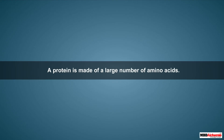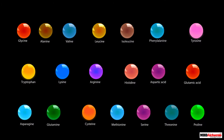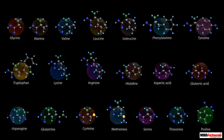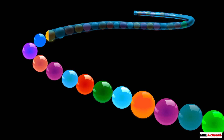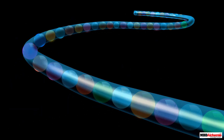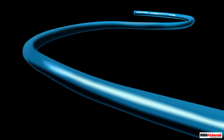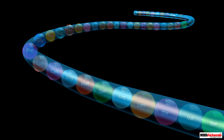As we already know, a protein is made of a large number of amino acids. Although there are only 20 amino acids, these amino acids link together in different sequences, giving rise to different polypeptide chains.